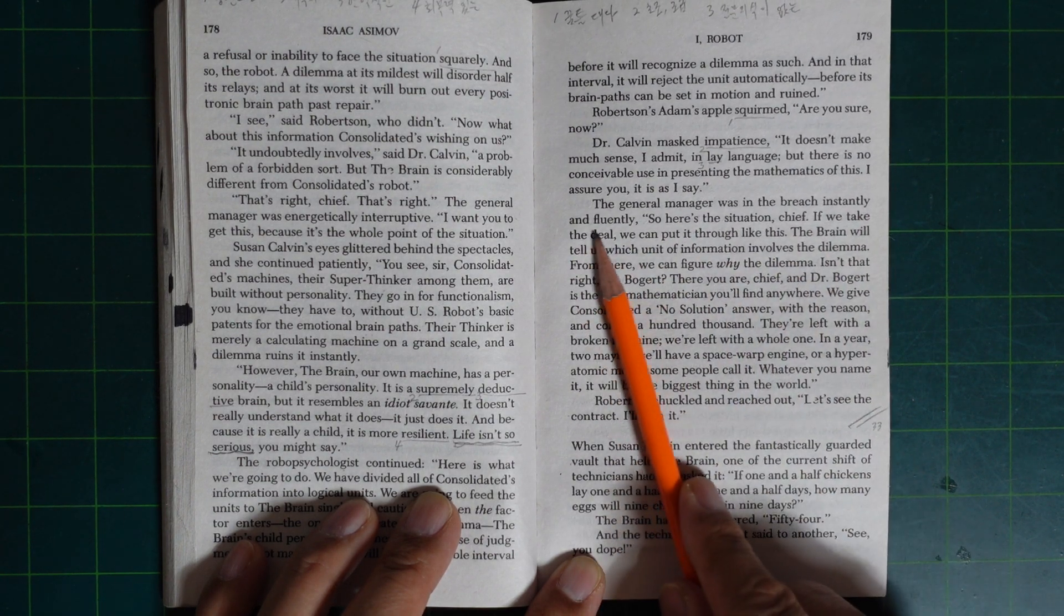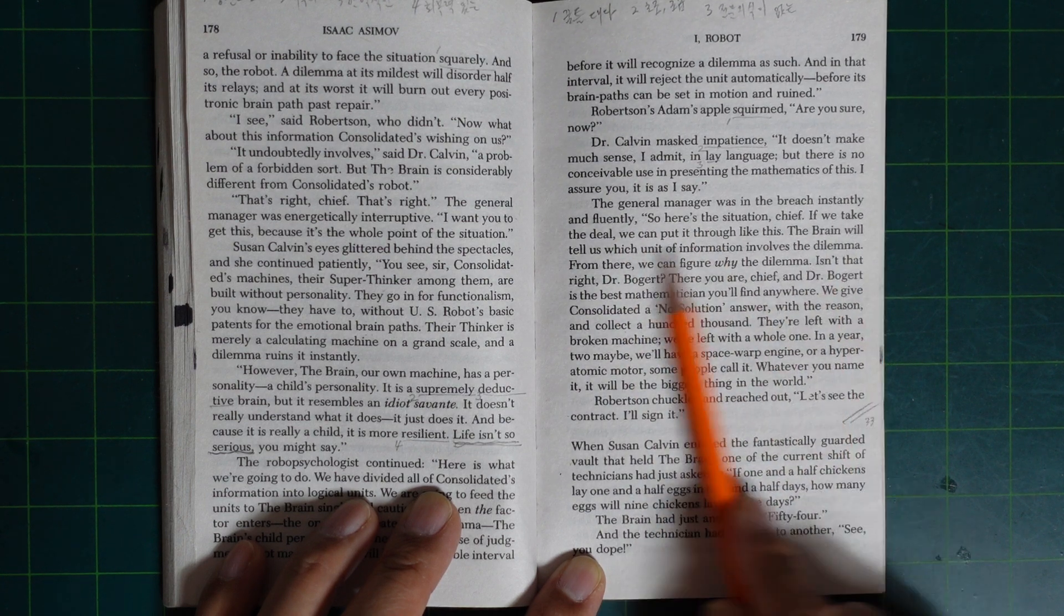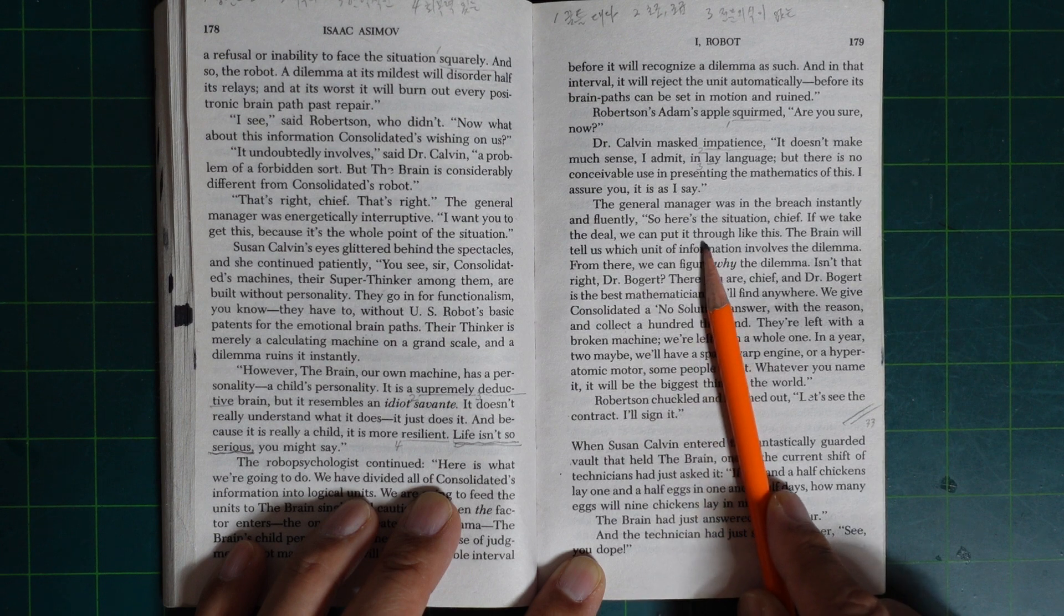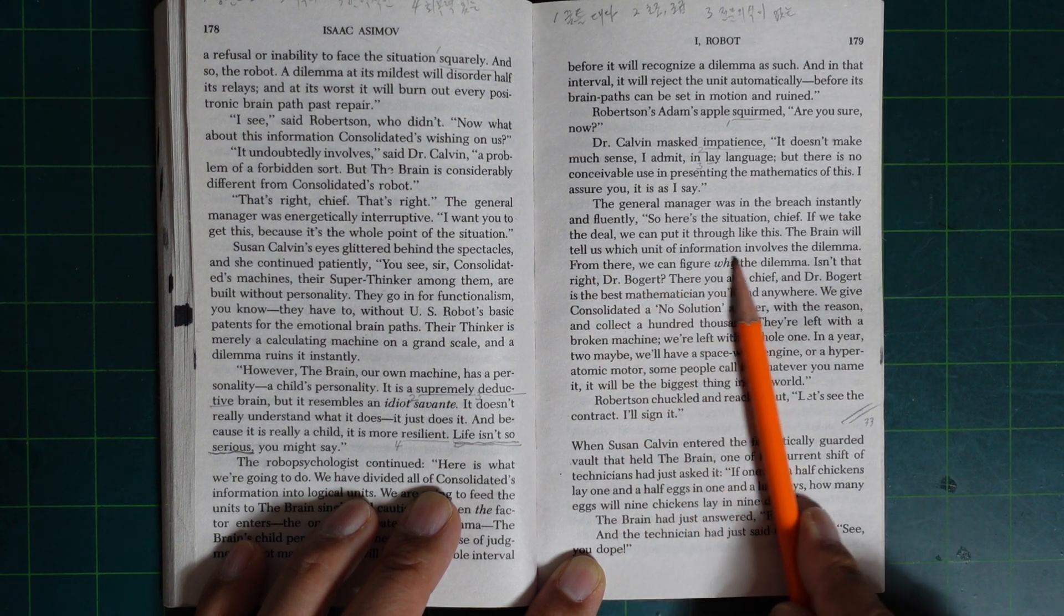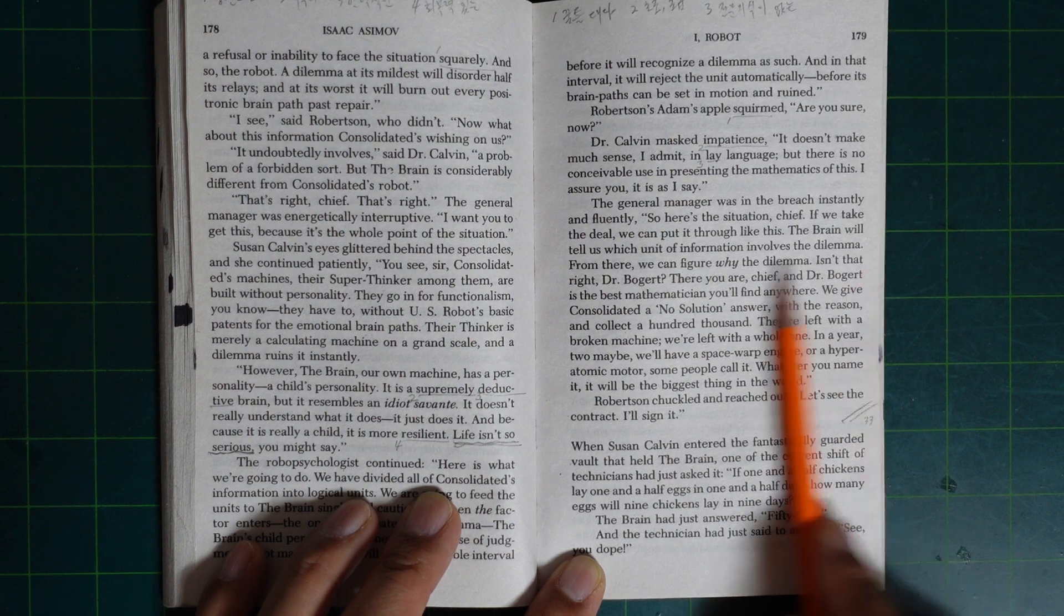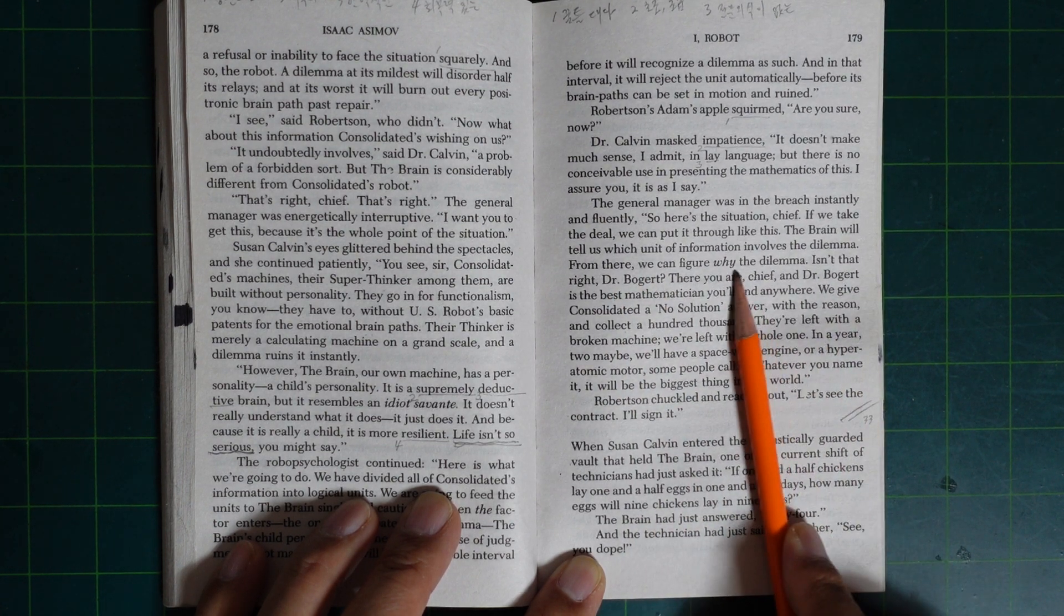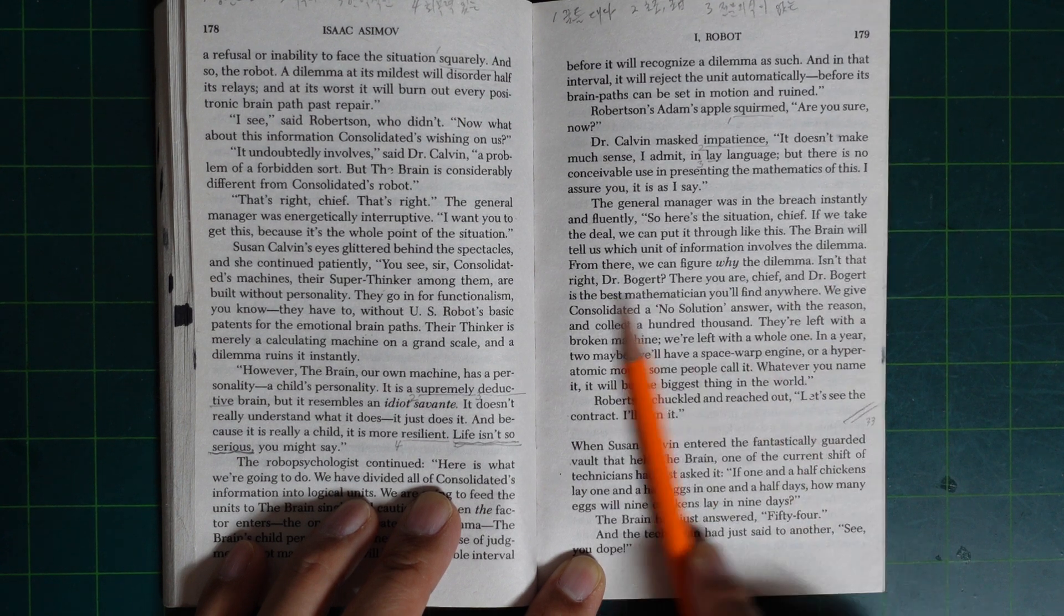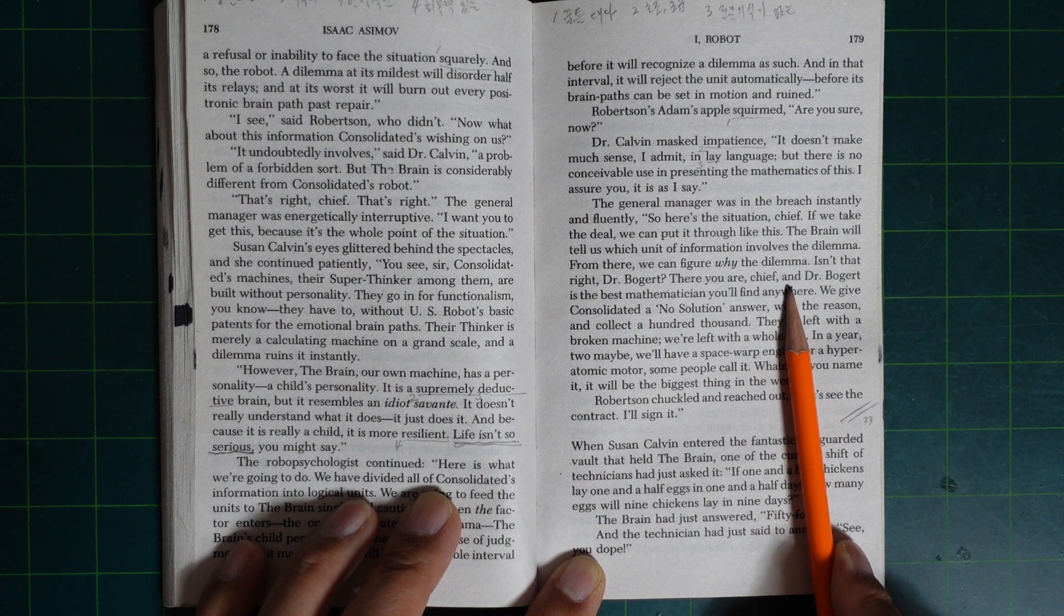The general manager was in the breach instantly and fluently. So here is the situation, Chip. If we take the deal, we can put it through like this. The Brain will tell us which units of information involve the dilemma. From there, we can figure out why the dilemma—isn't that right, Dr. Bogert? There you are, Chip. And Dr. Bogert is the best mathematician you'll find anywhere.